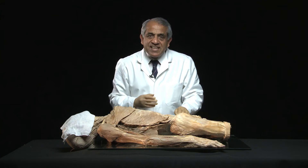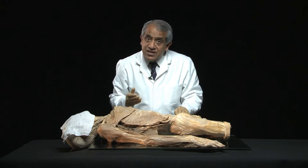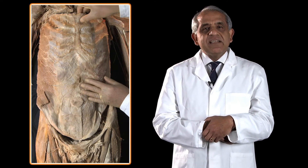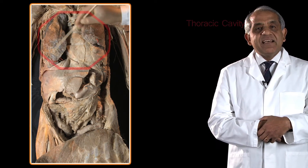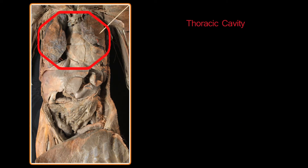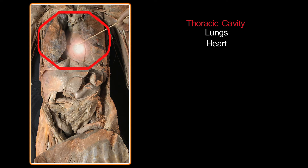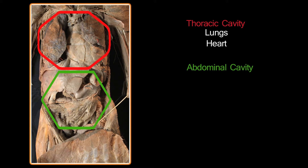Let's explore the interior of the trunk using this beautiful prosection and several others. Each of the three parts of the trunk encloses or contains a large cavity. Thus you have a thoracic cavity containing the two lungs, each in its delicate pleural sac, and the heart and various other important structures.